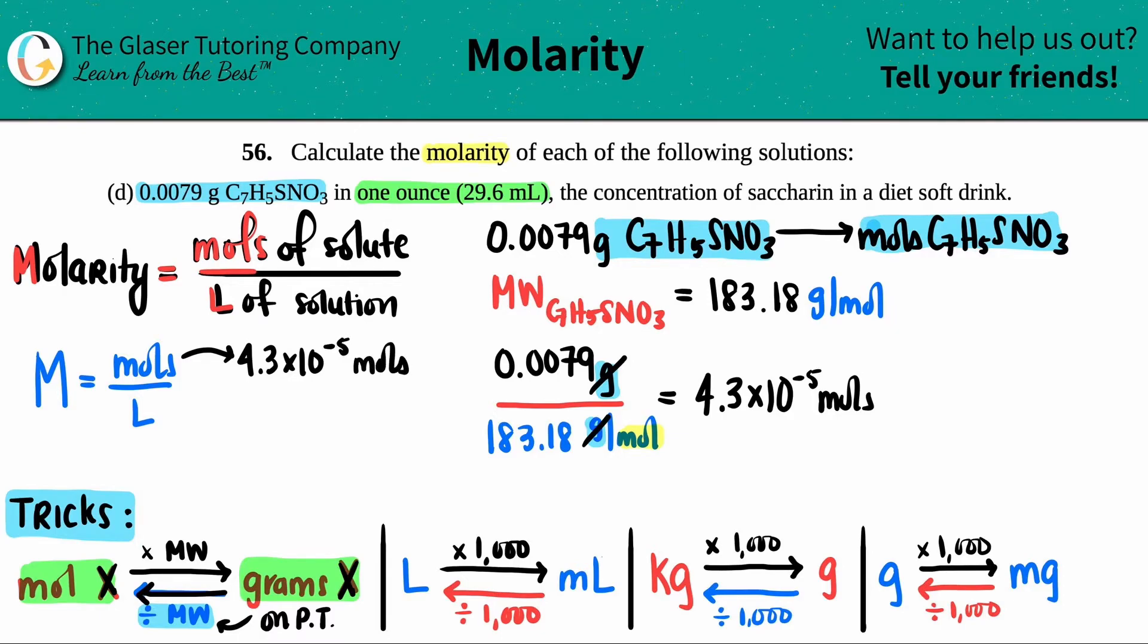One half done - we need to find the liters. They told us we had one ounce, and one ounce equals 29.6 milliliters. I need to convert to liters because that's what we need - we need liters on the bottom.